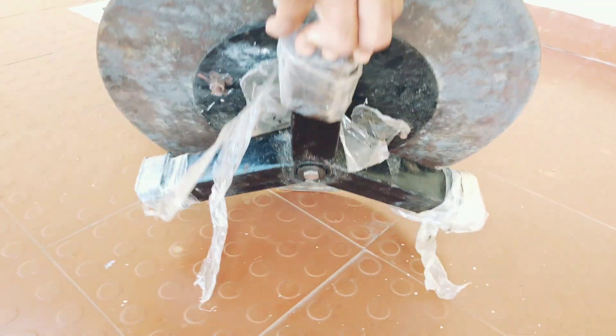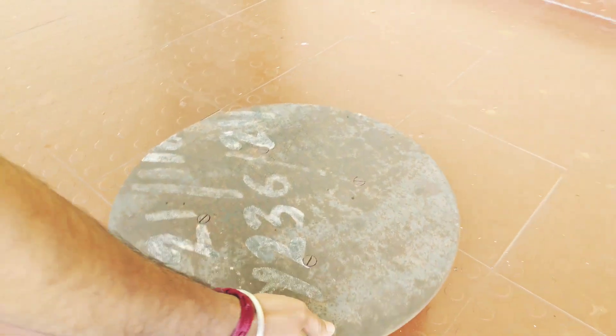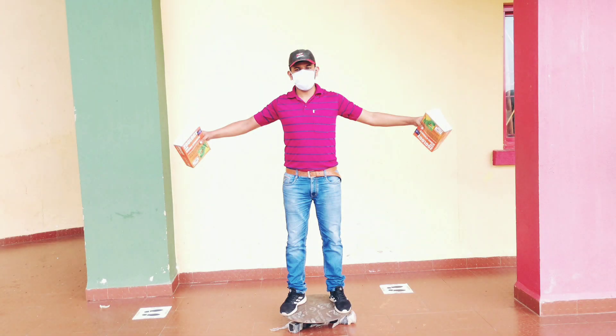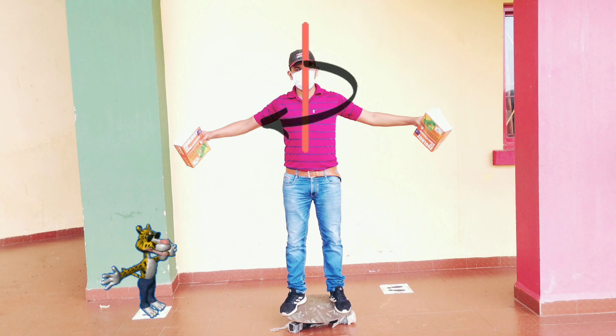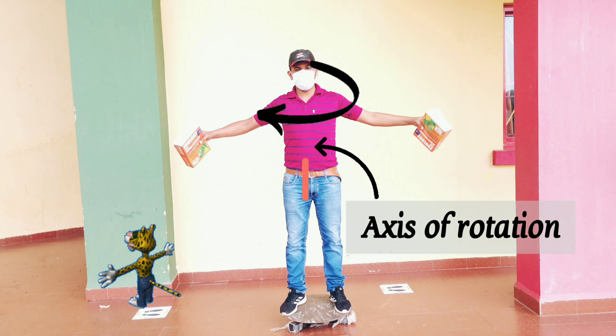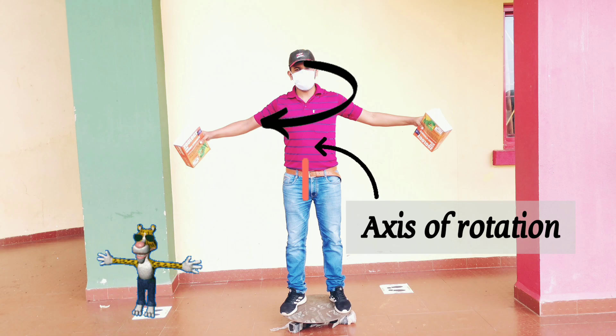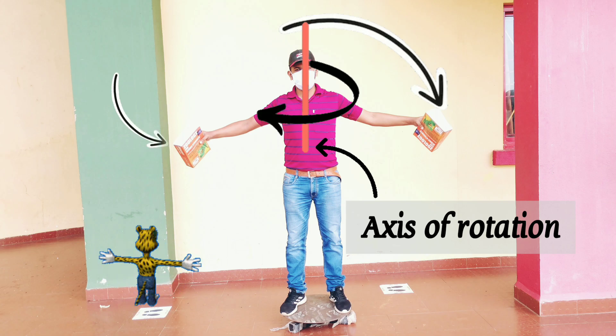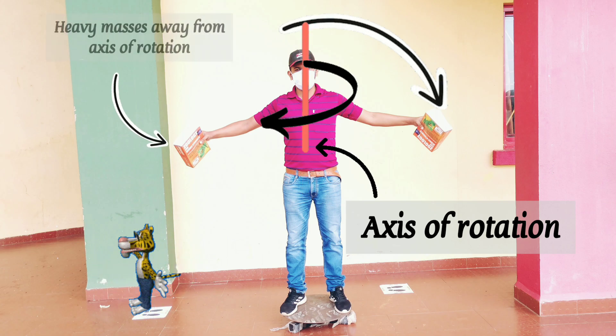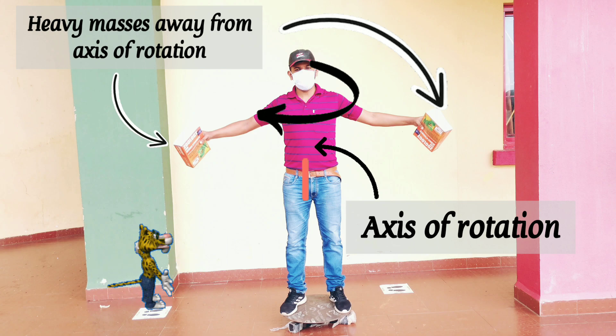This is a rotating table. There are no motors underneath. It can rotate freely with a slight push. When I stand on this rotating table, the axis of rotation is perpendicular to the ground. I have two heavy masses in my hands away from the axis of rotation.